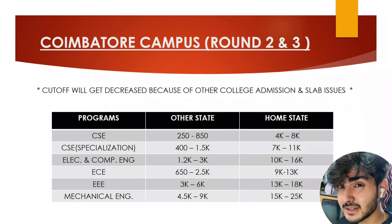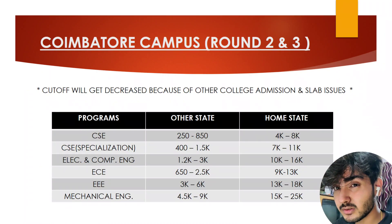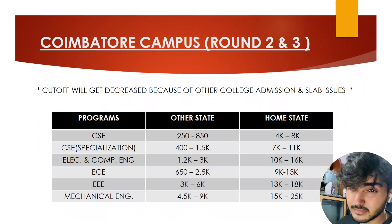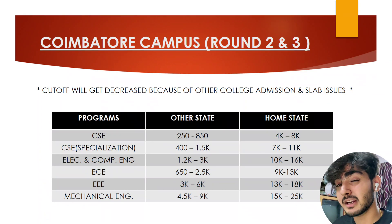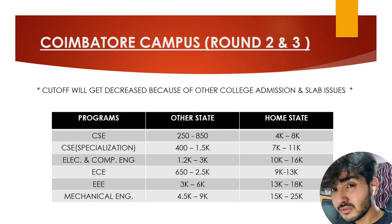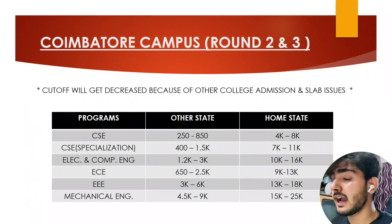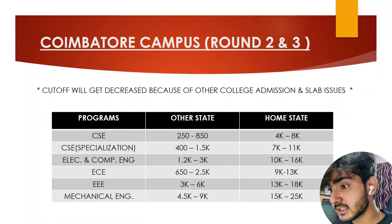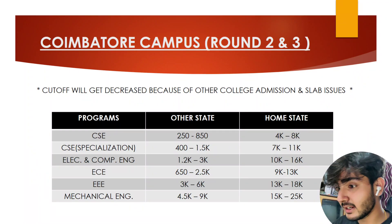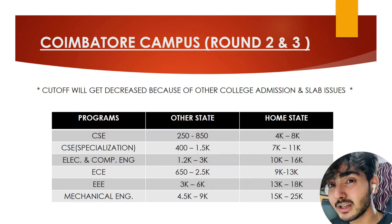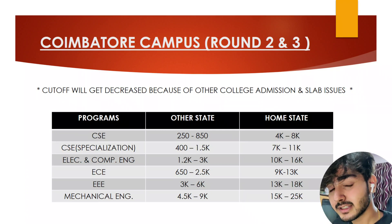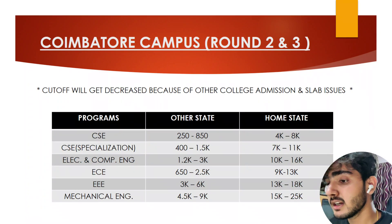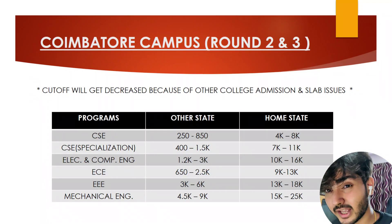Now let's go to the expected cutoffs. First, why will the cutoff decrease? Many college admissions — MIT, BITS, SRM and others — are happening, and students who didn't get admitted in round one will leave and go to those colleges. JEE results are also coming out and many will go for JEE Advanced. Also, some students who got CSE or CSE specialization in a high slab — like slab 3 or slab 4 where fees are very high — will leave that branch. All these reasons will cause the cutoff to decrease every year.